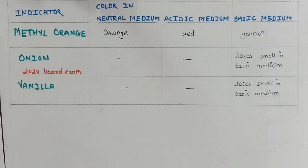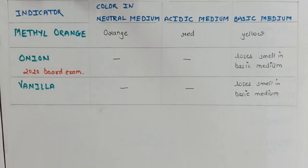So in this part of the video, we have discussed the properties of acids and bases, their types, what indicators are, and how we can use indicators to identify acid or base. In our next part of the video, we will be discussing the chemical properties of acids and bases. Thanks for watching. Have a nice day. Happy learning.